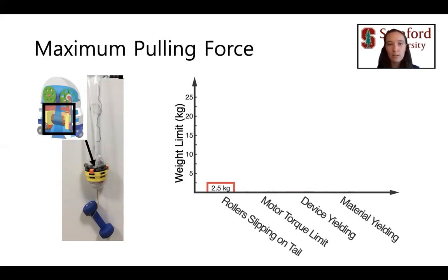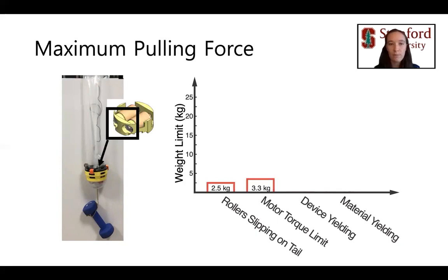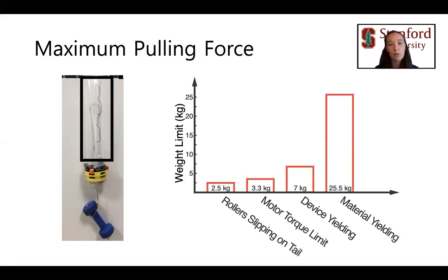This weight limit could be improved by increasing the force between the rollers and the tail. The factor with the next lowest weight limit was the motor torque limit. We calculated that with the motors at their torque limit, the robot could lift 3.3 kg, which could be further improved by using stronger motors. The tip mount device broke apart at a weight of 7 kg, which could be improved by reinforcing the design and using stronger materials. Finally, we calculated that the robot would be able to lift 25.5 kg before its body material yielded. This is encouraging because it means that if we can improve the other portions of the design, our robot can apply very strong pulling forces.